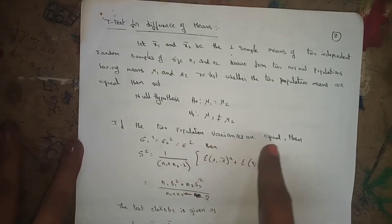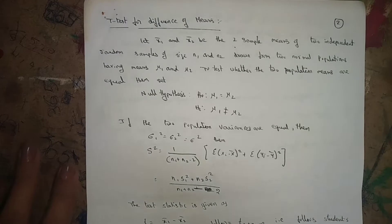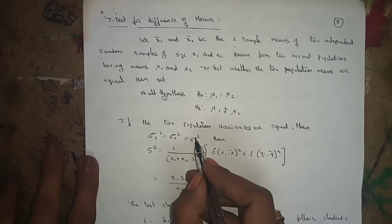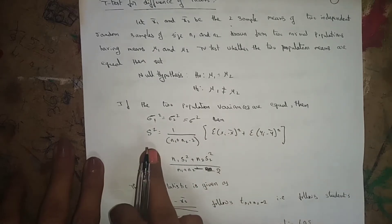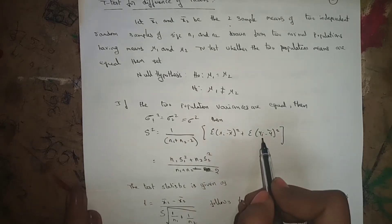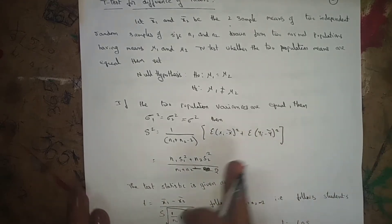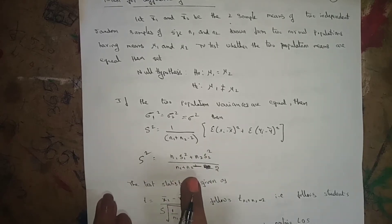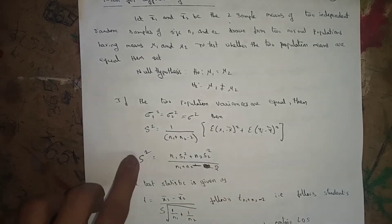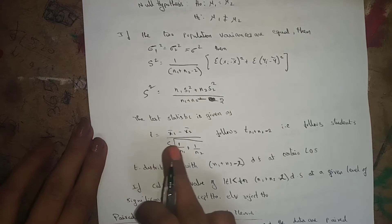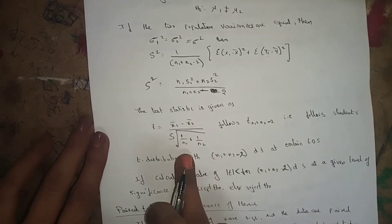If the two population variances are equal — that is, sigma1² = sigma2² = sigma² — then s² is equal to (1 / (n1 + n2 − 2)) × [Σ(xi − x̄)² + Σ(yi − ȳ)²], which simplifies to (n1·s1² + n2·s2²) / (n1 + n2 − 2). The test statistic is t = (x1 bar − x2 bar) / [s × √(1/n1 + 1/n2)].